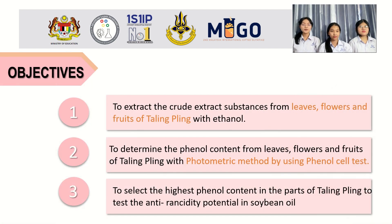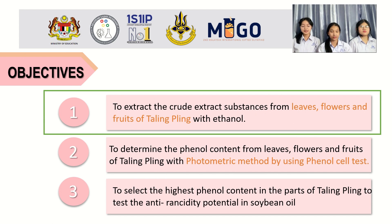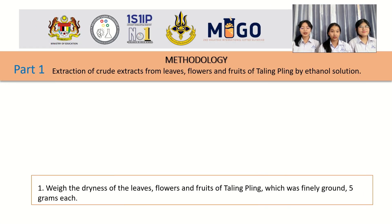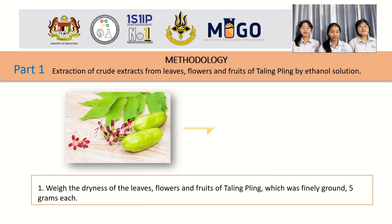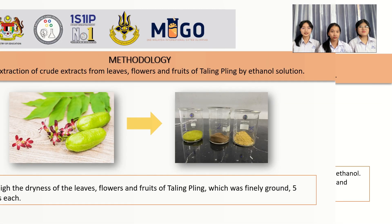The next topic is Objective 1: to extract the crude extract from leaves, flowers, and fruits of bilimbi with ethanol. Methodology step 1: leaves, flowers, and fruits of bilimbi are dried and ground at a temperature of 65 degrees Celsius, then ground into powder and weighed at 5 grams each.